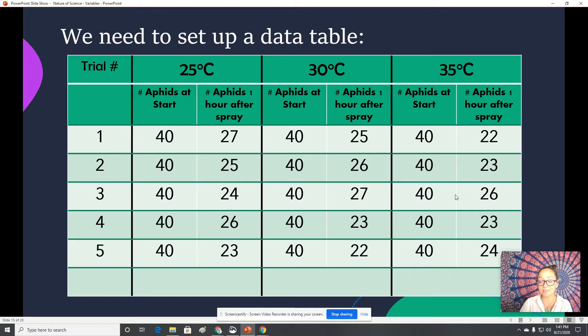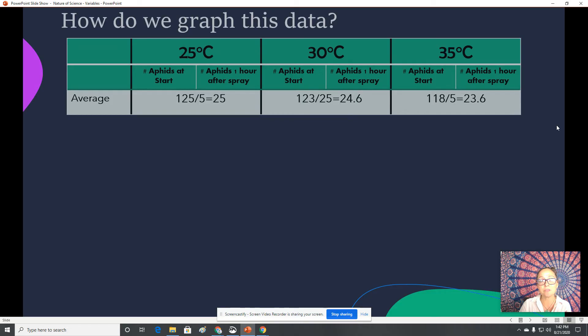So when you look at this, we would find after five trials our average. So at 25 degrees Celsius, we had an average of about 25 aphids remaining or 15 dying. At 30 degrees Celsius, it was 24.6. And then at 35 degrees Celsius, you have 23.6. And if you look at any one of these individual trials at a time, like for example, look at the fifth trial. At the fifth trial, it would look like the 30 degrees Celsius was the most reliable at killing off aphids. If you look at trial number three, it looks like 25 degrees Celsius was the best at getting rid of aphids. So it's important to repeat your experiment as many times as you can in order to have a more accurate depiction of what the results are.